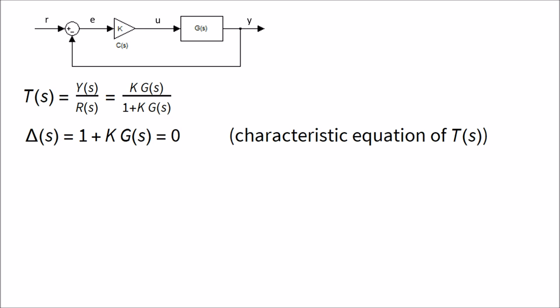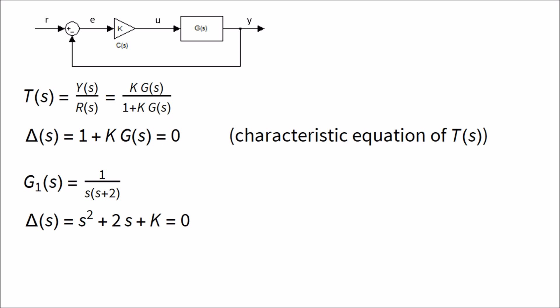In the last video, we used an example transfer function G1 — a simple system with a pole at the origin and a pole at minus 2. If you plug this into the closed loop characteristic equation, you get s-squared plus 2s plus K equals zero. What we can do now is brute force numerically calculate the roots, because that's exactly what the root locus is — the location of all roots of the characteristic equation as K varies from 0 to infinity. Let's jump over to MATLAB and implement a quick script to do that.